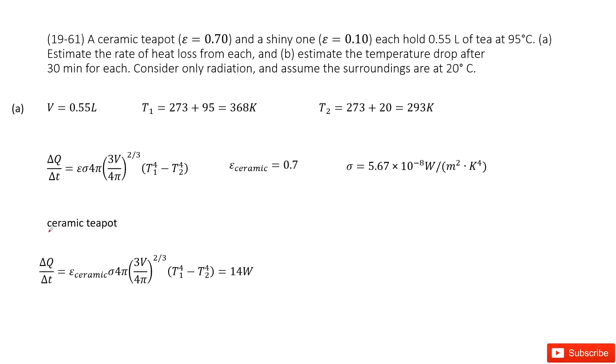For the ceramic teapot, epsilon is 0.7, so we input all quantities and get the answer. For the shiny teapot, epsilon is 0.1, and we get that answer. The next part asks for the temperature drop after 30 minutes.